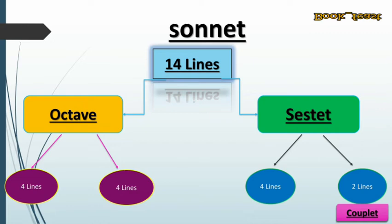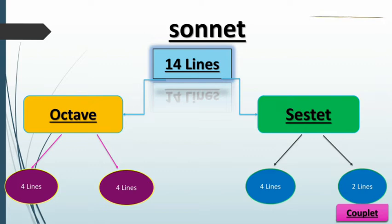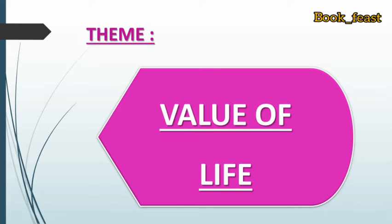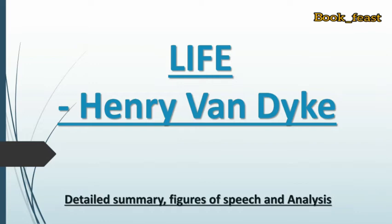The octave is further divided into groups of 4-4 lines, and the sestet into 4 and 2 lines. Those final two lines are called the couplet. In the octave, you can see the poet's opinions and questions. In the sestet, he gives the answers and a clear view of his opinion. The main theme of this poem, 'Life,' is the value of life — what is the value of our life? The reason we're discussing sonnets is that this poem is itself an example of a sonnet.